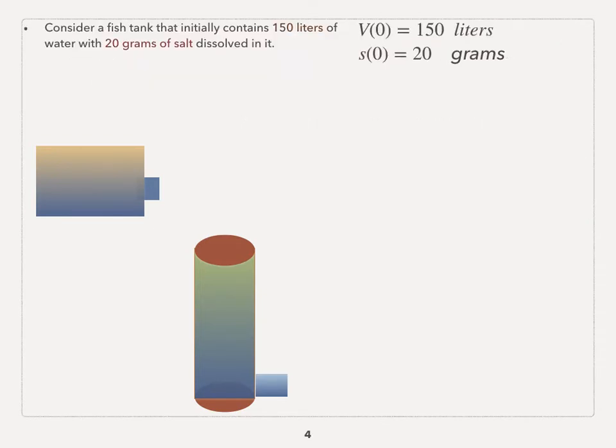Now let's go through the first sentence of the problem. Initially, the fish tank contains 150 liters of water. That means v(0) is 150. And it contains 20 grams of salt. That means s(0) equals 20.